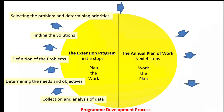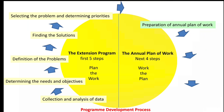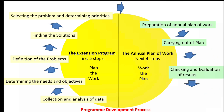With these five steps, we have to plan the extension program. For the execution, we need to prepare our annual plan of work. Later, we need to execute that plan. After execution, we have to evaluate our extension program to check whether we reached our objectives or not. If we reached our objectives, our program is successful and we can upscale it to the next level. If we are unable to reach our objectives, that's a failure — we have to reconsider the program, identify the flaws, and plan and execute our extension program again.